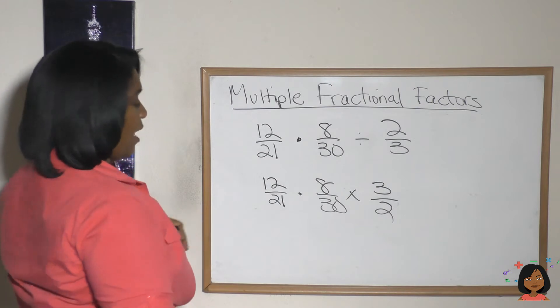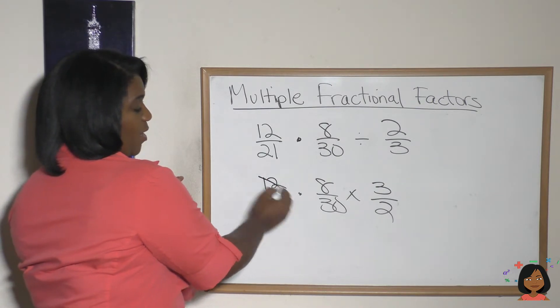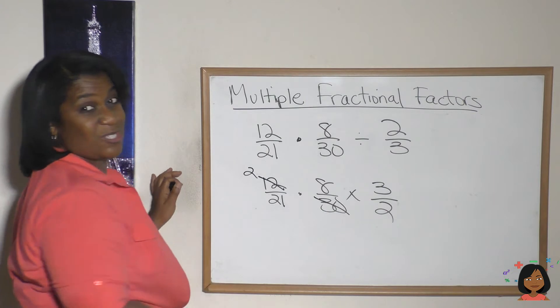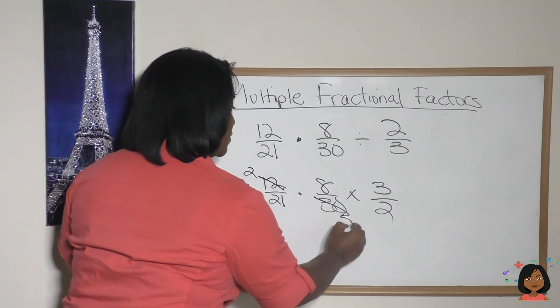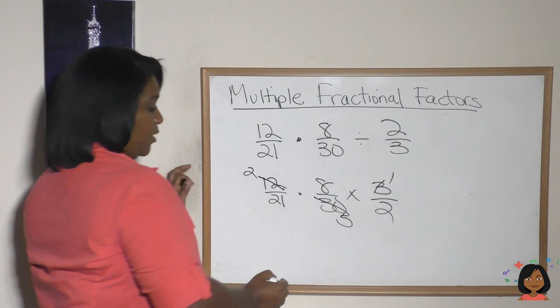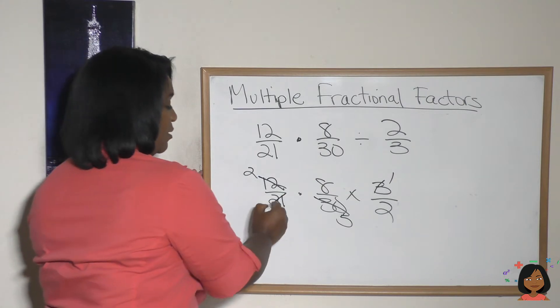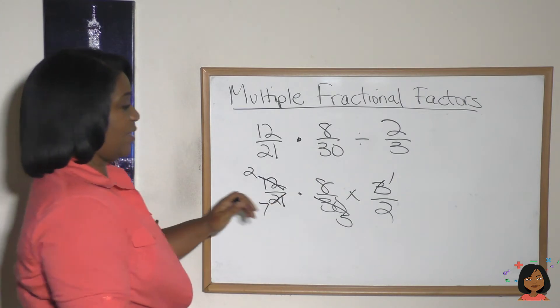Okay, so let's see. Where should we start? How about six goes into 12 two times, and six goes into 30 five times? Three goes into three one time, and how about 21? That means a seven. We've got a two and an eight here.